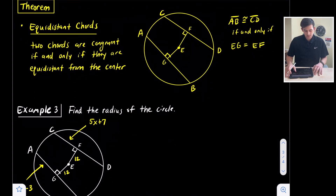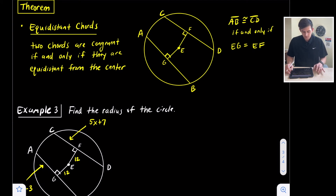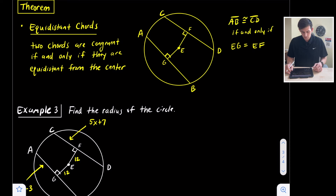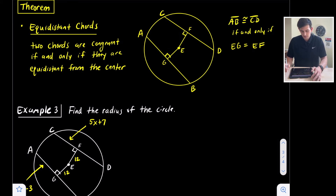The last theorem is the Equidistant Chords Theorem: two chords are congruent if and only if they are equidistant from the center of the circle — again in the same circle or congruent circles. Looking at the diagram, AB is congruent to CD, and the chords are congruent if and only if these distances from the center are equal to each other.